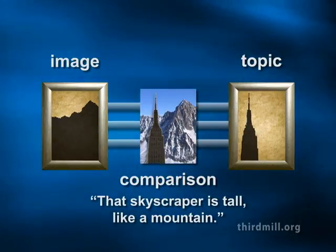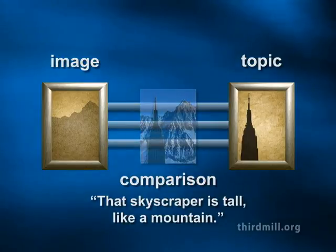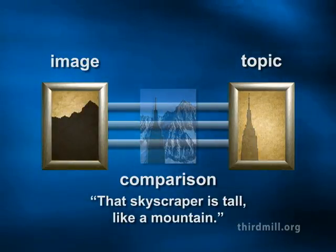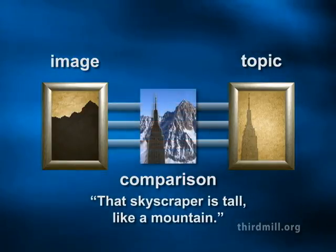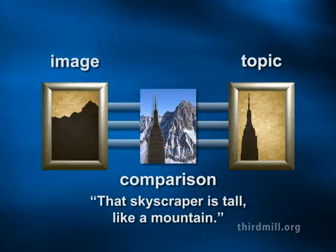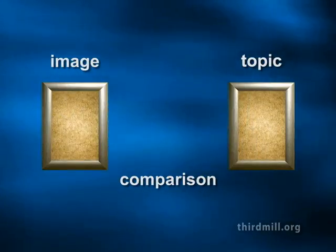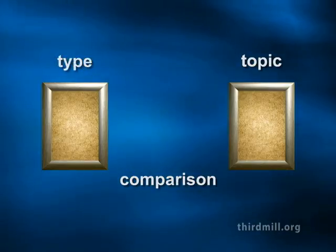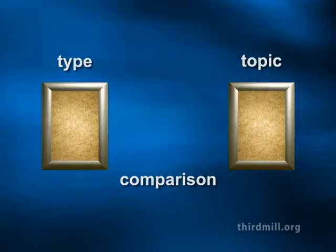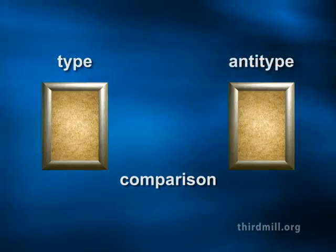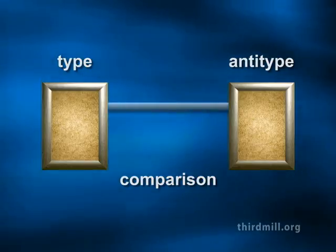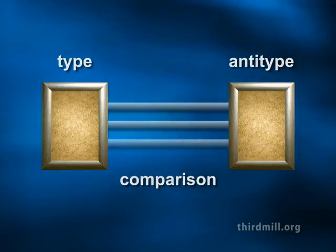Now, when we actually use figures of comparison, we do not always state all three of these elements explicitly, but the image, topic, and one or more points of comparison are at least implied for any figure of comparison to communicate successfully. These three elements also appear either explicitly or implicitly in biblical typology. First, a type functions as an image — an item that is being compared with the main item of concern. Second, the anti-type is the topic — the item to which the type is being compared. And third, the type and anti-type are linked to each other by one or more points of comparison.